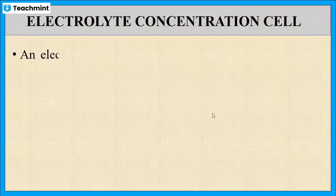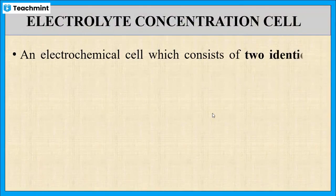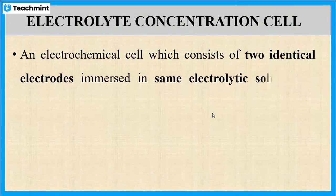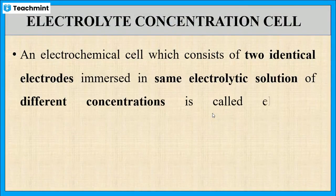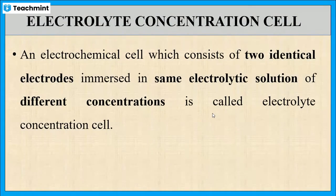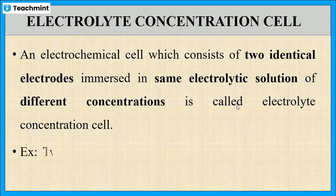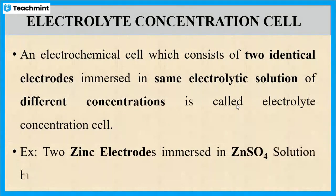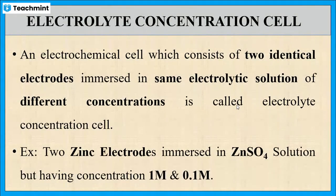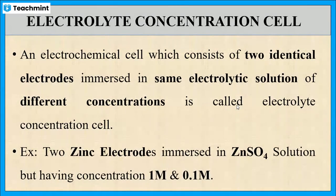It is an electrochemical cell which consists of two same electrodes immersed in the same electrolytic solution but having different concentration. It is known as an electrolyte concentration cell. For example, two zinc electrodes immersed in two beakers containing the same zinc sulfate solution but having different concentrations.